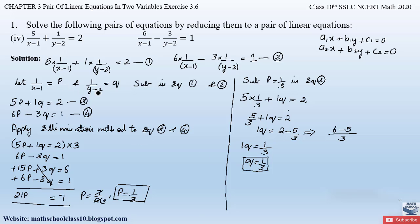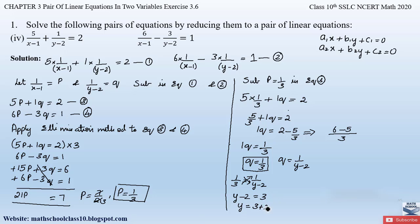We had assumed q = 1/(y−2) and we obtained q = 1/3. Equating the right-hand sides: 1/3 = 1/(y−2). Cross multiplying: y − 2 = 3. Sending −2 to the right-hand side: y = 3 + 2, therefore y = 5.